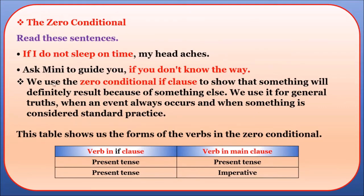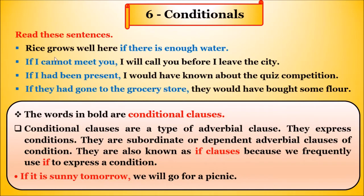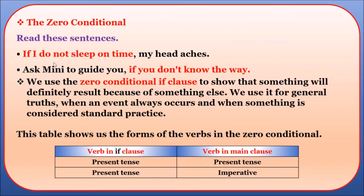In zero conditionals, the result can come first, followed by the action. We use zero conditionals for general truth — when an event always occurs and when something is considered standard practice. The verb forms in zero conditionals: if the present tense comes in the if clause, present tense also comes in the main clause, or an imperative.